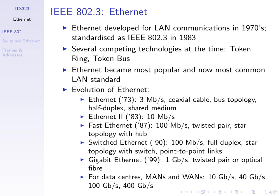40 gigabit per second Ethernet exists, and 100 and 400 are being worked on or planned. These are mainly for high-speed data center connections, like at a Google data center connecting many servers, or between buildings across the city. LANs nowadays mainly use switched Ethernet, in some cases gigabit Ethernet, and that's what we'll focus on.